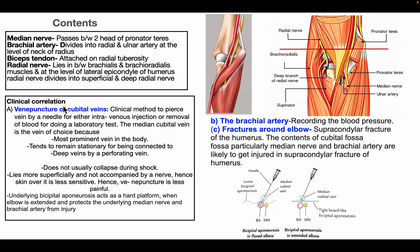The first clinical aspect is venipuncture of the cubital vein. It is a clinical method to pierce the vein by needle for intravenous injection or removal of blood for laboratory tests. The median cubital vein is the first vein of choice because it is the most prominent vein, tends to remain stationary due to its connection to deep veins by a perforator vein, does not usually collapse during shock, lies superficially, and is not accompanied by a nerve, making the skin over it less sensitive and the venipuncture less painful.